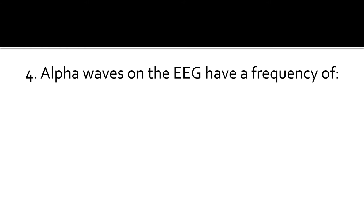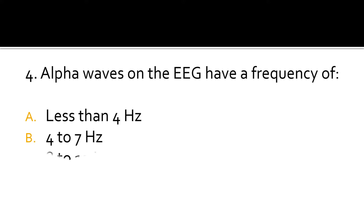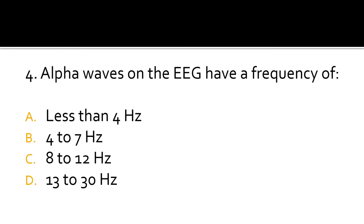Question 4. Alpha waves on the EEG have a frequency of: less than 4 Hz, 4 to 7 Hz, 8 to 12 Hz, or 13 to 30 Hz. The correct answer is 8 to 12 Hz. Alpha waves have a frequency of 8 to 12 Hz.